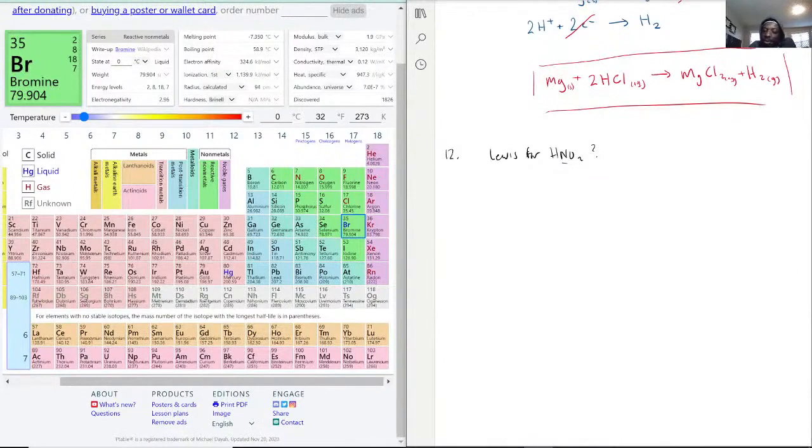We've covered this but we're going to keep covering it. Nitrogen has five valence electrons because it's 2s2 2p3. Hydrogen has 1s1 so it's one valence. Oxygen has 2s2 2p4.